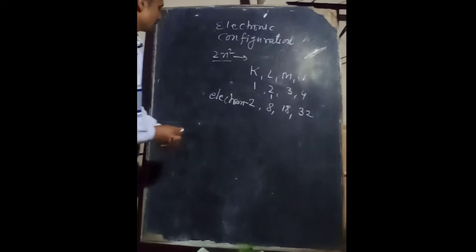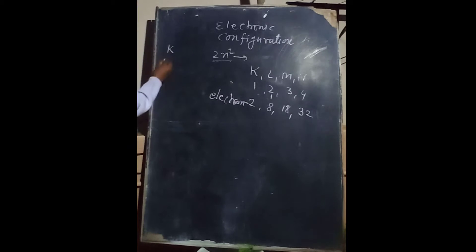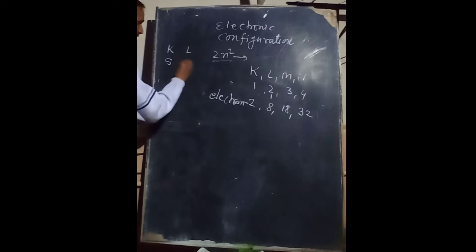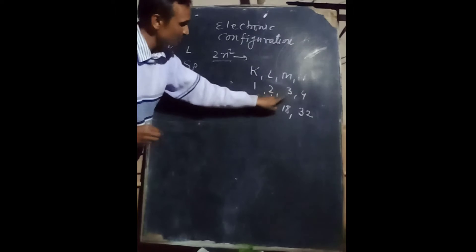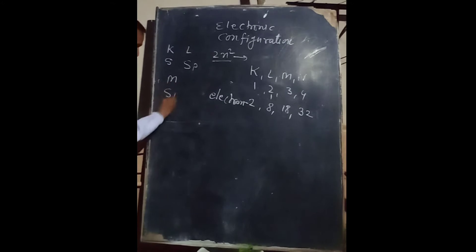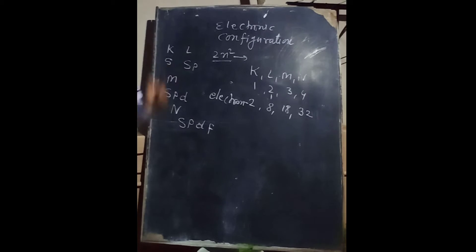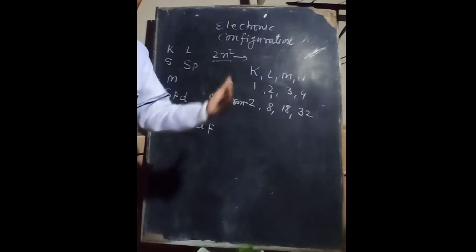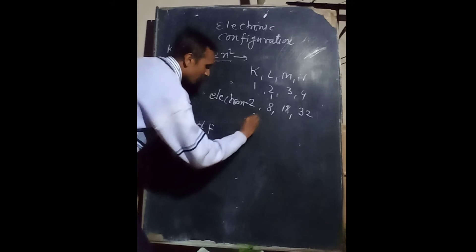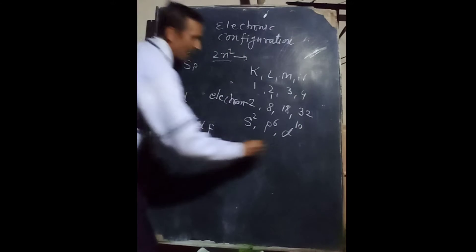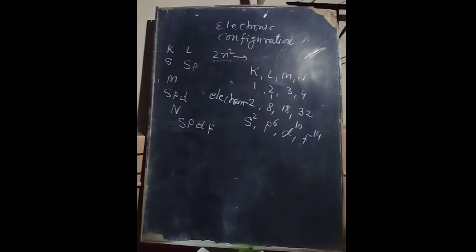The electrons revolving in one orbit have sub-orbits. K shell has one sub-orbit, which is s. L shell has two sub-orbits: s and p. M shell has three sub-orbits: s, p, and d. N shell has four sub-orbits: s, p, d, and f. These are the sub-orbits. The electrons filled in each: s has 2, p has 6, d has 10, and f has 14 electrons.